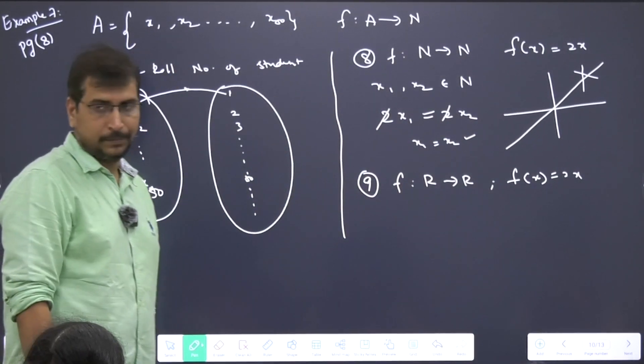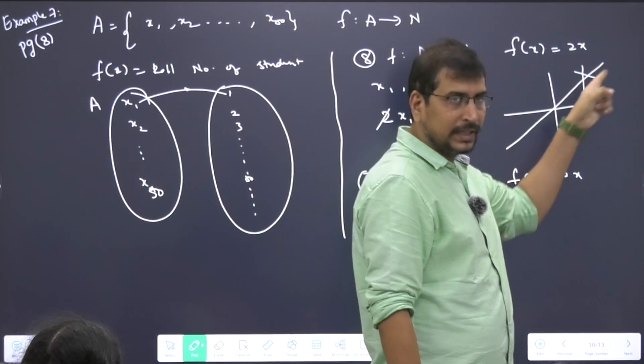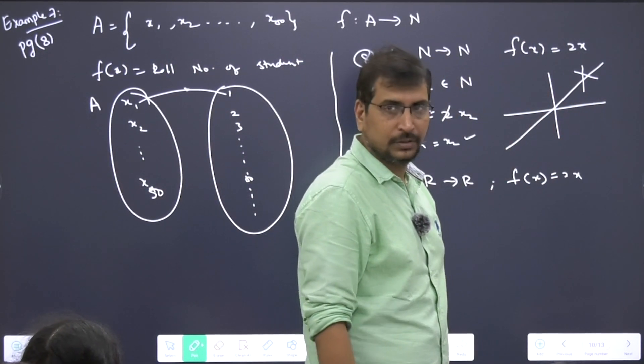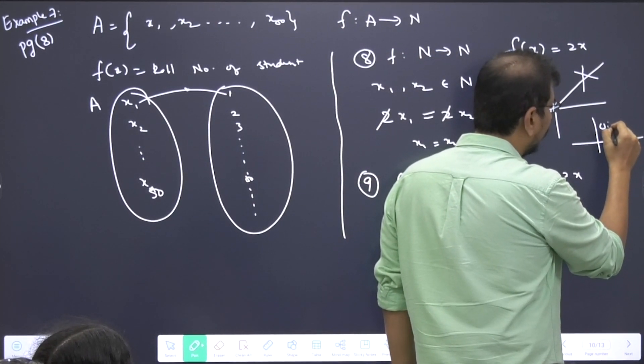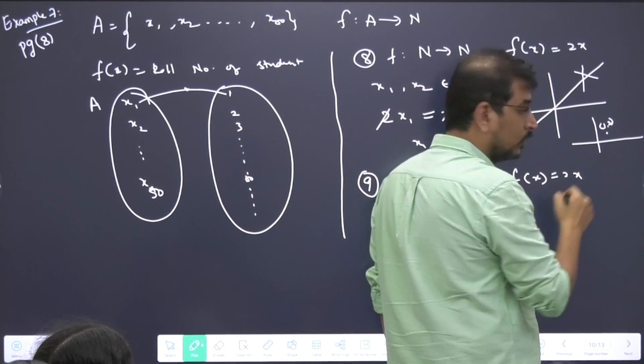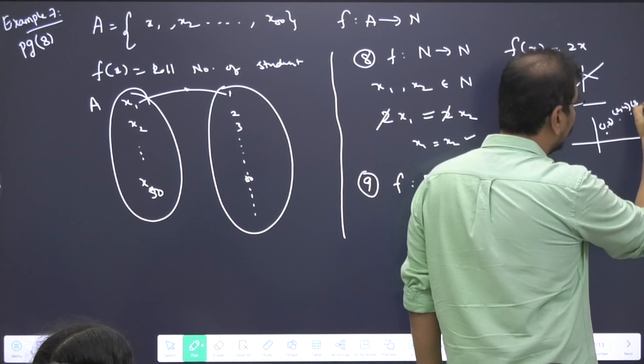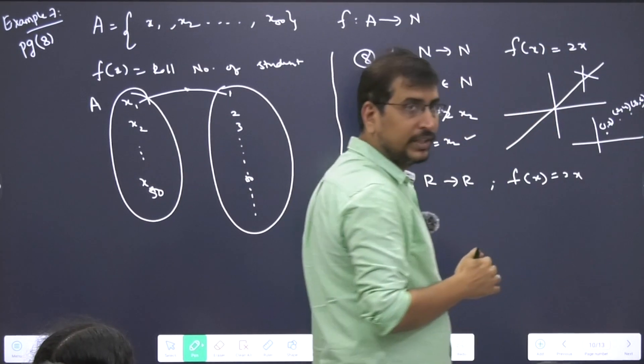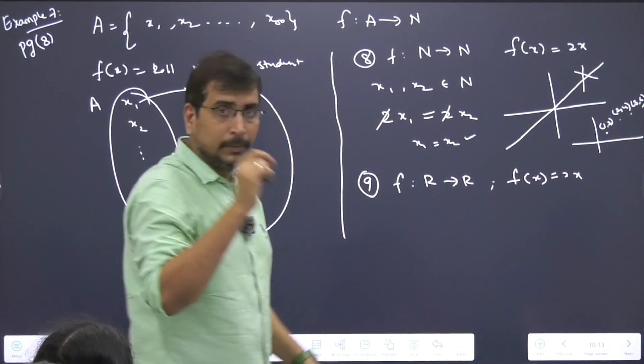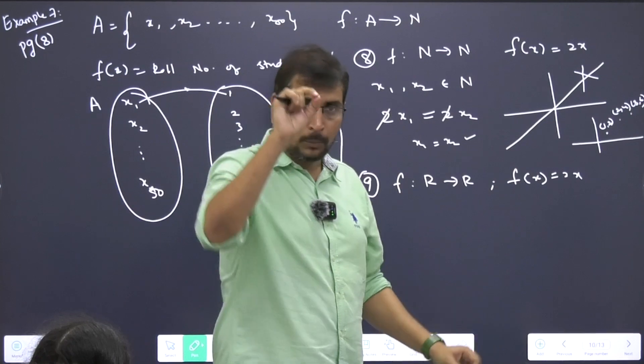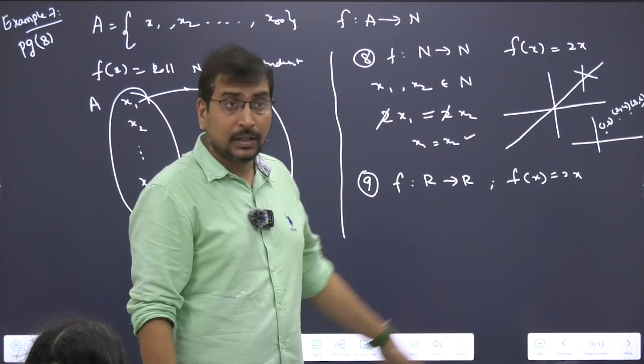Why? Because only natural numbers - the input only for natural numbers - you will have the points associated. How will the graph look like? 1 comma 2, 2 comma 4, 3 comma 6, it keeps on going like this. When you give 1 as input, output comes out to be 2. This graph is only points, whereas this graph is a continuous line.